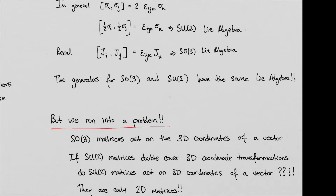So we might be inclined to think that they are sort of one and the same thing — one might be a representation of the other. They have the Lie algebra in common. However, one set of matrices is two-dimensional, two by two, while the other one is a three by three matrix. So the question becomes: what kind of vectors or vector-like objects are those two-by-two matrices operating on? And that's where the language of spinors and vectors sort of comes into play. We think now that they're different representations — one is just a different representation of the other in a lower dimension.